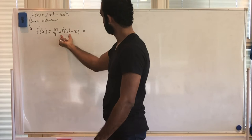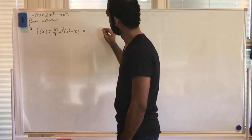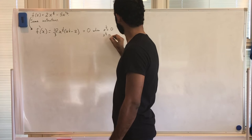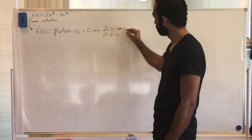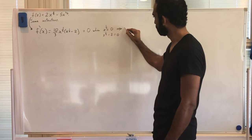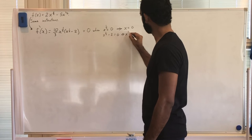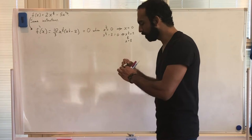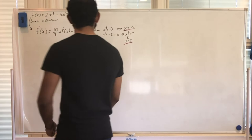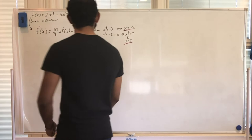I can factor that: pull out (10/3) and x^(1/3), leaving x^(1/3) minus 2 inside. Setting f' = 0: either x^(1/3) = 0 (so x = 0) or x^(1/3) = 2 (so x = 8). These are our critical numbers — 0 and 8 — making the first derivative zero or undefined.